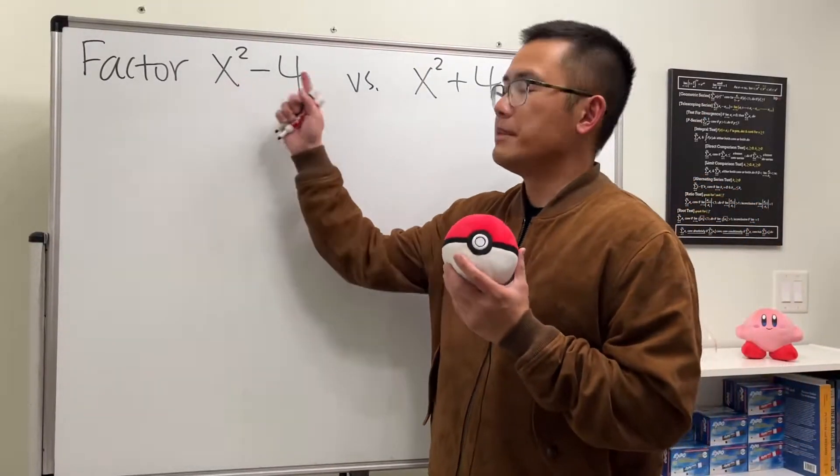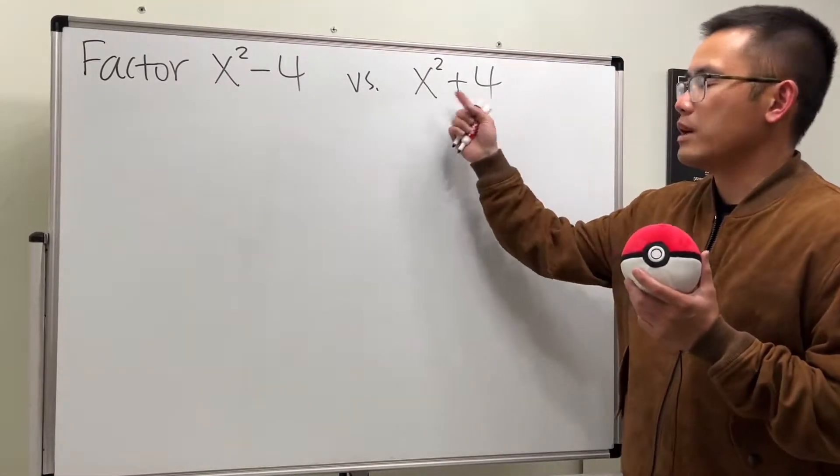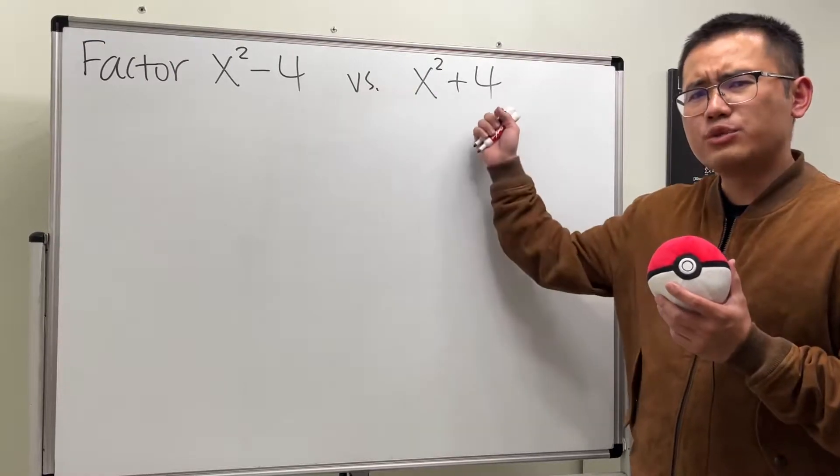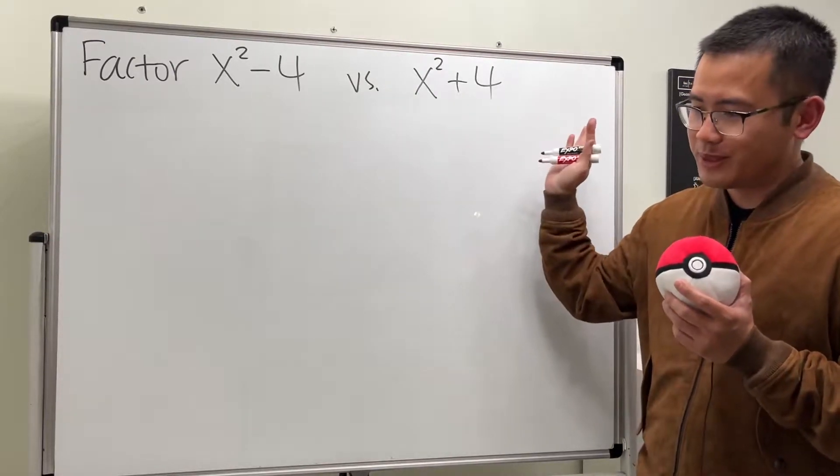Let's see how we can factor x squared minus 4 and x squared plus 4. And you might think that this right here is not possible, but just watch till the end.